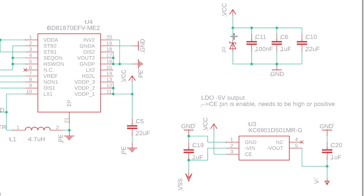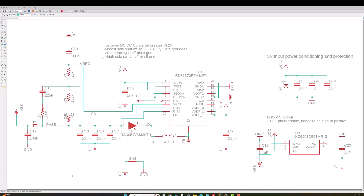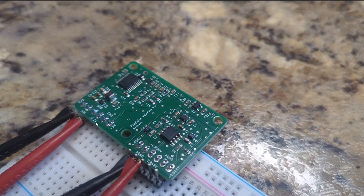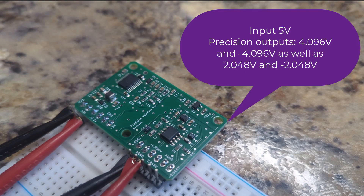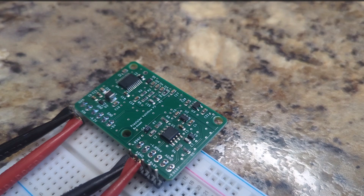There's also a Zener diode on the input to protect the circuit if someone applies too high a voltage. The input to the whole design is 5 V from a clean power supply, and the outputs include both positive reference voltages and their corresponding negative reference voltages — making this board suitable as a voltage reference source for ADCs or DACs requiring bipolar references.